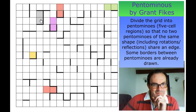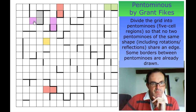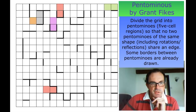We can do one more cell. It's not possible for this cell to not be part of the gray region, because if this is part of a different pentomino, the gray region has to reach this cell where it's meant to be divided — so that's not going to work. We can actually label this cell as gray as well.